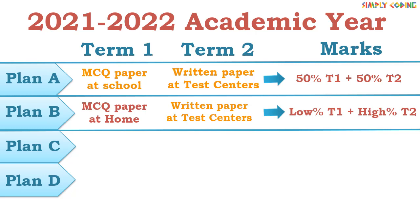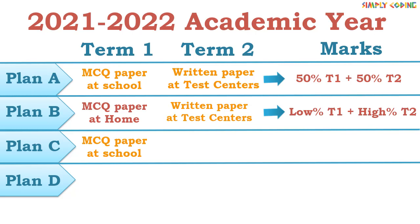They have not declared the percentage split yet but will declare it later. Plan C is the reverse situation of plan B — meaning you are able to go to your schools for the term 1 MCQ exam, but the term 2 exams are cancelled.